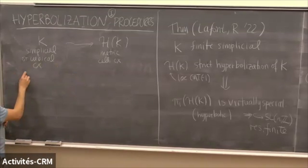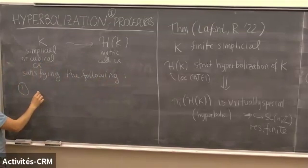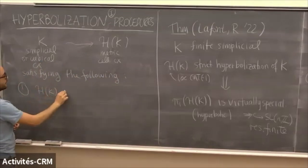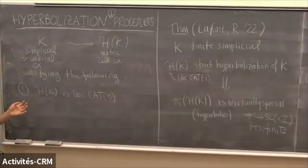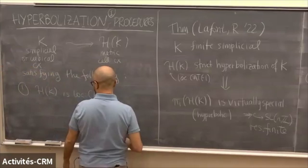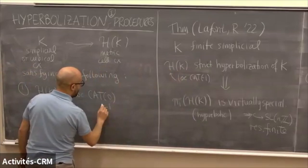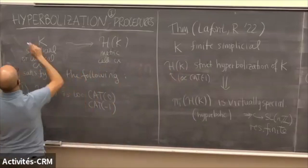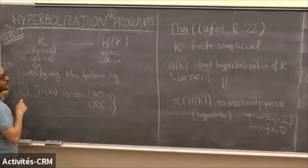The first axiom — the key one — is that H(K) is locally CAT(0). This is some terminology Gromov made up; I'm not going to change it. You want the output of your procedure to be at least a locally CAT(0) space; that's what you call a hyperbolization procedure. If you want something that is truly hyperbolic, i.e., CAT(-1), this is what people call a strict hyperbolization procedure.